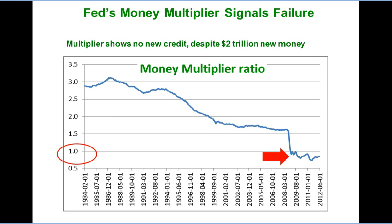Based on the fractional reserve system, banks could lend up to 10 times their cash reserves. When they do lend, this increases the money supply a lot. But when banks redeem loans or write them off, money supply shrinks as fast as it grows.